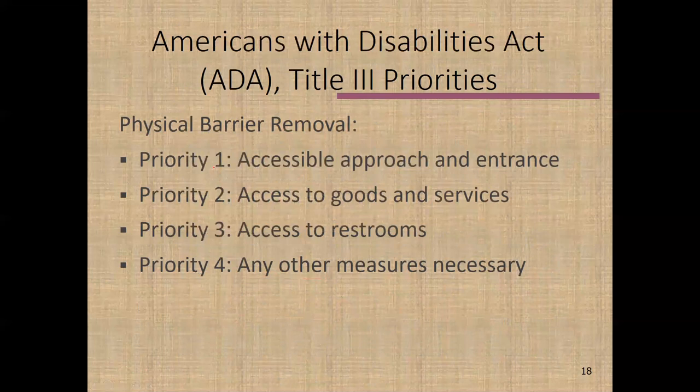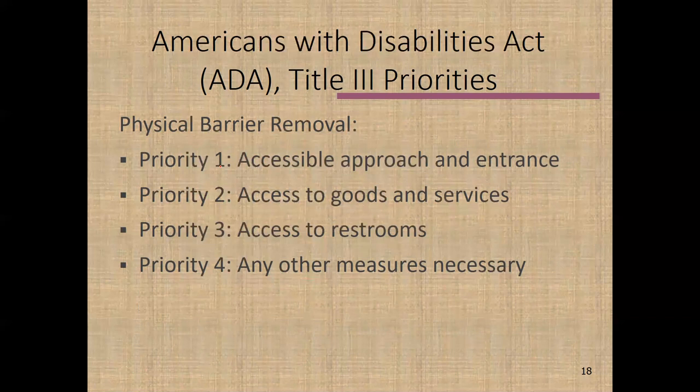Physical barrier issues are probably the most challenging for businesses to confront. With a new facility, the architect and contractor will have addressed most of these from the outset, so there won't be as much to do day-to-day. With an older facility — especially a historical one — there may be more to do. Some aspects will be grandfathered and you won't have to make all changes, but as you renovate, the act of renovation often means you must bring things up to ADA requirements.